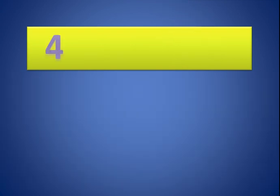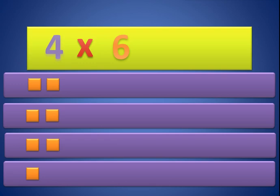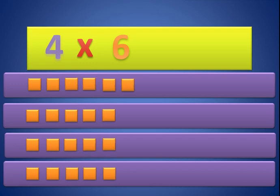Now 4 times 6. We need 4 groups — 1, 2, 3, and 4. We need 6 in each group — 1, 2, 3, 4, 5, and 6. So 4 times 6 equals 24.